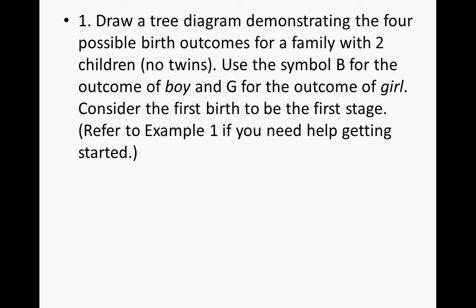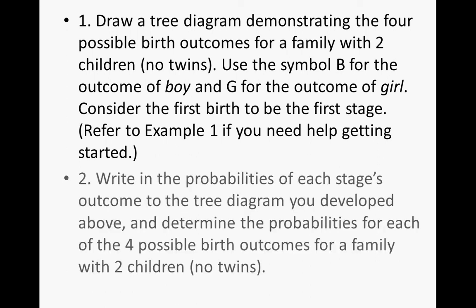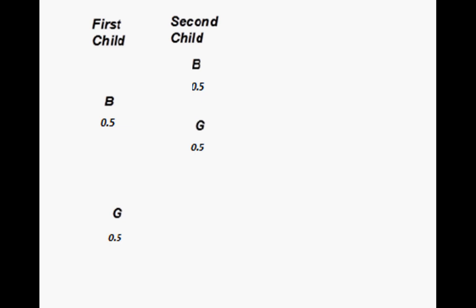Refer to Example 1 if you need help getting started. For part two, write the probabilities of each stage's outcome on the tree diagram and determine the probabilities for each of the four possible birth outcomes. To set this up: the first child could be a boy or a girl. Because it is a 50% chance, we put 0.5 under B and 0.5 under G. For the second child, you also have a 50-50 chance of having a boy or girl, regardless of what the first child was.